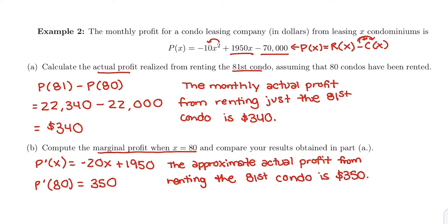So remember, marginal approximates actual. The approximate actual, and you could even say monthly profit since that's what this is, from renting the 81st condo is $350. Pretty close and a lot faster to calculate.